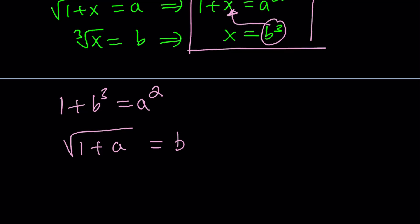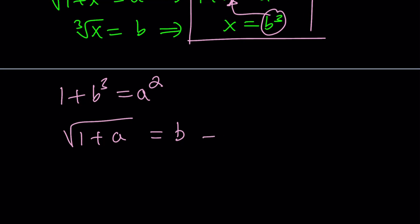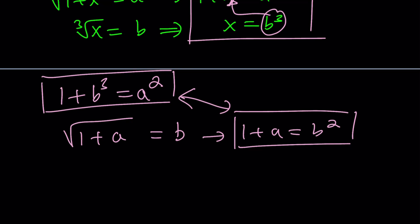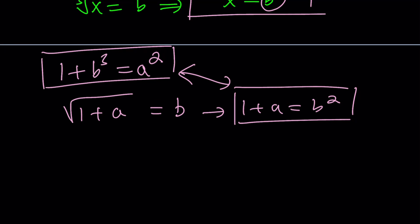If you forget about the x's and everything, from here by squaring both sides, we get 1 plus a equals b squared. That's just another equation that we can use. Now we have another system with only a and b involved. Let's subtract b cubed from this equation and we get a squared minus b cubed equals 1. From the other equation, we can isolate a and write it as b squared minus 1.